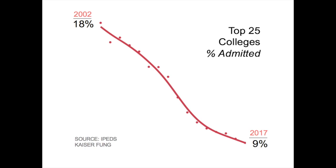It comes down to this curve, which shows how the top 25 colleges have become more and more selective over the last 15 years. In 2002, these colleges accepted 18 out of every 100 applicants. By 2017, only 9 out of every 100 applicants got in.